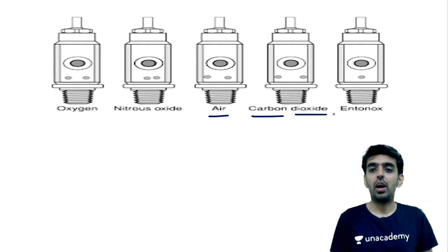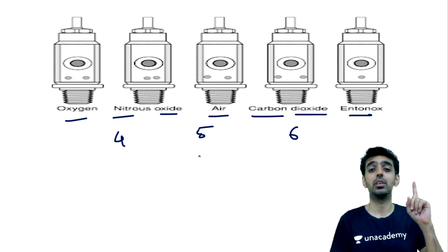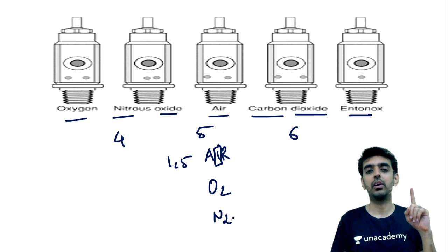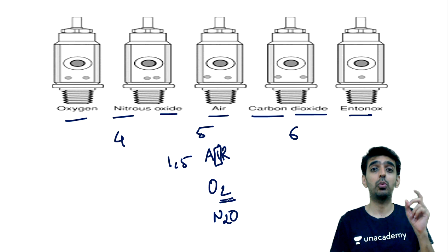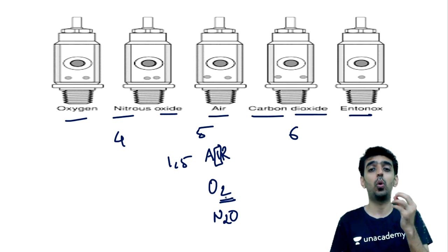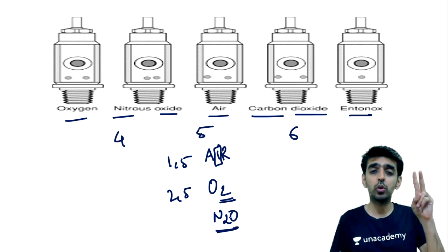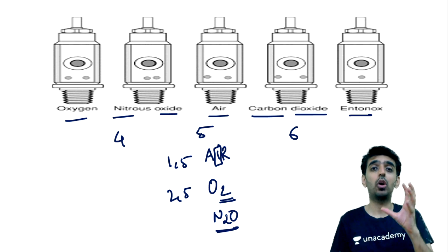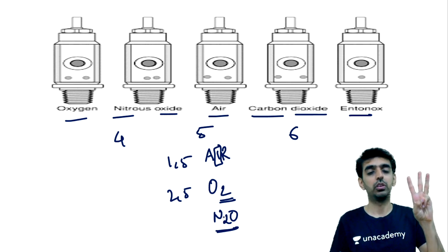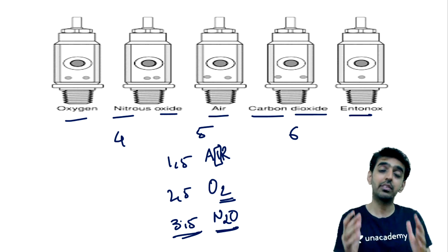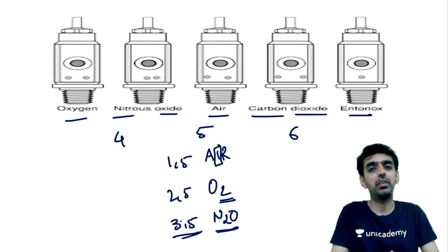For other gases: Oxygen — its chemical formula is O₂, two molecules combine to form oxygen, so its pin index is 2,5. Nitrous oxide — its formula is N₂O, two atoms of nitrogen and one atom of oxygen, giving a total of three atoms, so its pin index is 3,5. This is a simple mnemonic to remember the pin index of all gases — something I have discussed repeatedly in my classes and previous YouTube sessions.